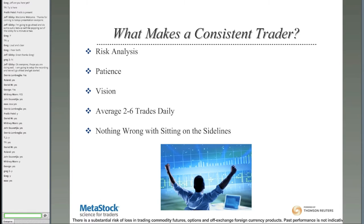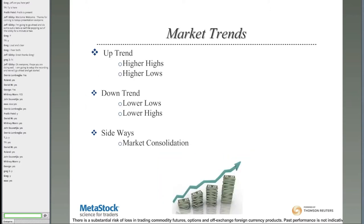When asked what it takes to be a consistent trader, a lot of it has to do with psychology and the emotions of trading. Risk, in my opinion, is number one. You have to be patient — we're not trying to turn the market; we're looking for consistent setups, anywhere from one to six trades a day. Sometimes taking a day off or missing a trade — there's nothing wrong with that. My specialty is day trading the intraday markets, and I'm more of a trend trader, not a scalper.